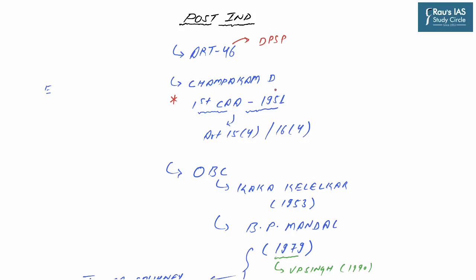The constitutional validity of the 1921 Communal Government Order by the Justice Party was challenged in the Champakam Dorai Rajan case, and the Supreme Court struck down that provision by terming it violative of the basic structure of the Constitution. To overcome this hurdle, the Government of India came up with the First Constitutional Amendment Act 1951, which inserted Article 15(4) and Article 16(4) into the Constitution.